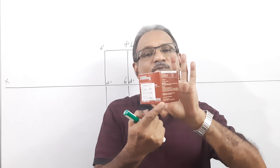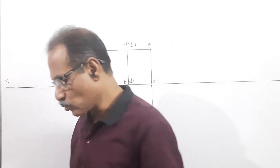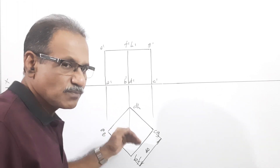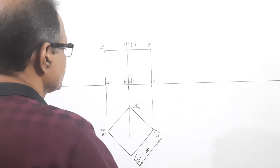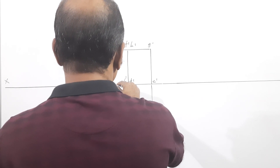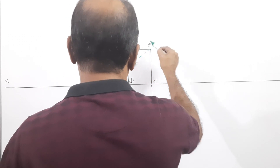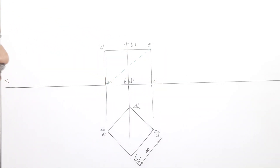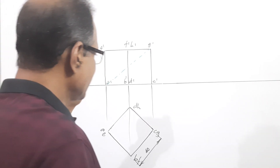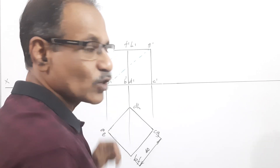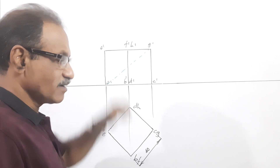There are four possible solid diagonals. I keep this simple position. The question says the cube is resting on HP on a corner with the solid diagonal vertical.